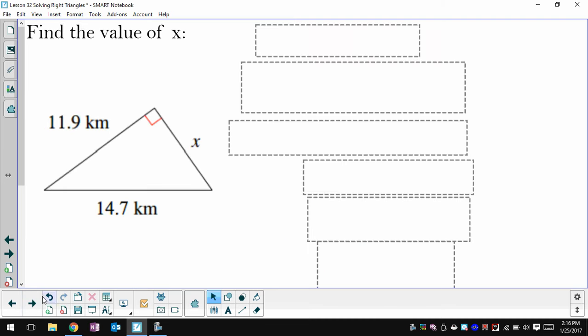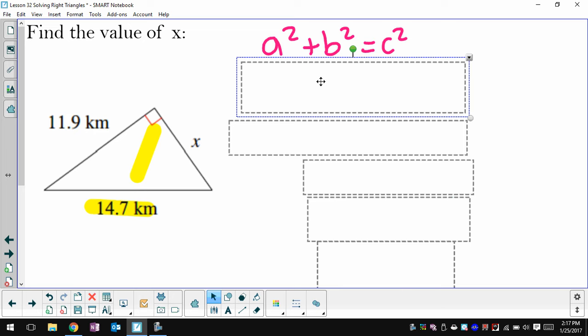So go ahead and pause here and find the missing side one. So here, 14.7 is going to represent my hypotenuse, the side across from 90. So that's going to be my value for c when I plug in.